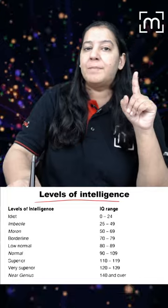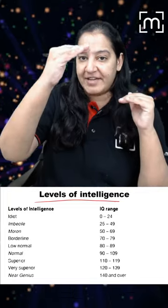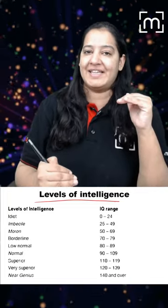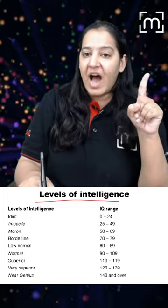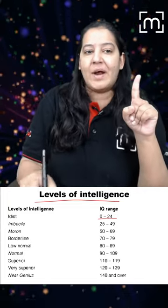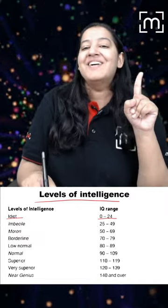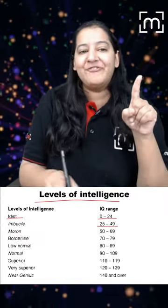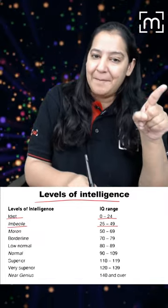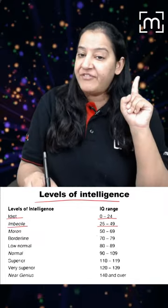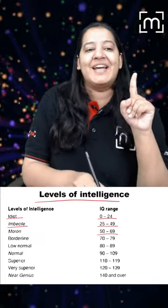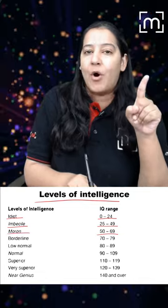Based on the IQ, the person can be divided into the following categories. When the IQ is 0 to 24, it is known as idiot. When 25 to 50, it is known as imbecile. When 50 to 70, it is known as moron.